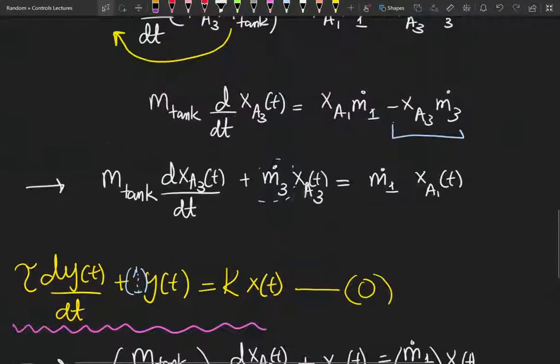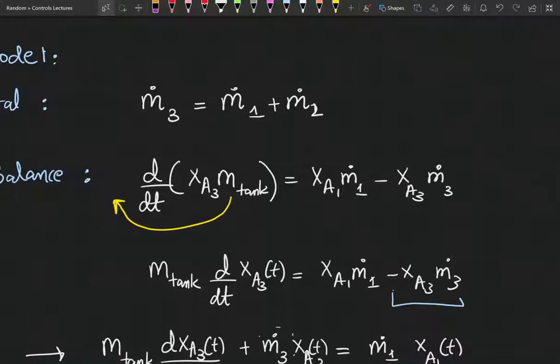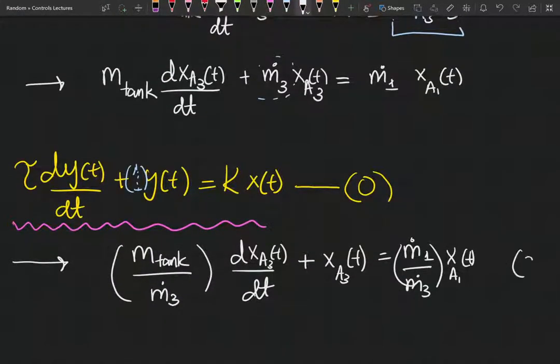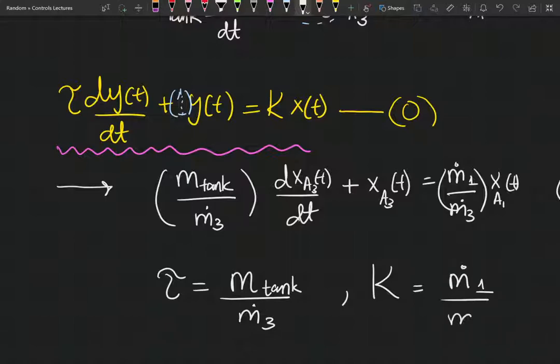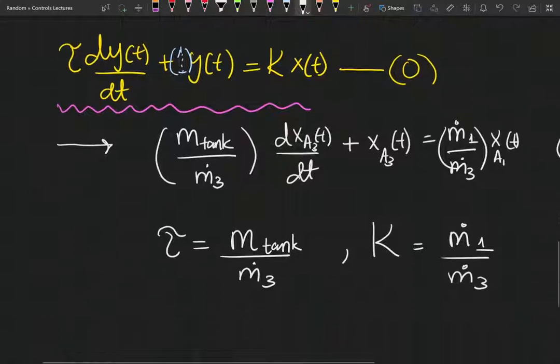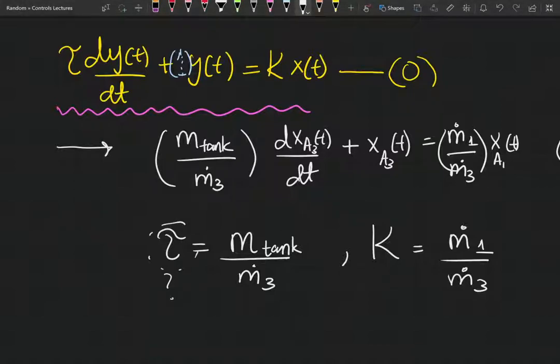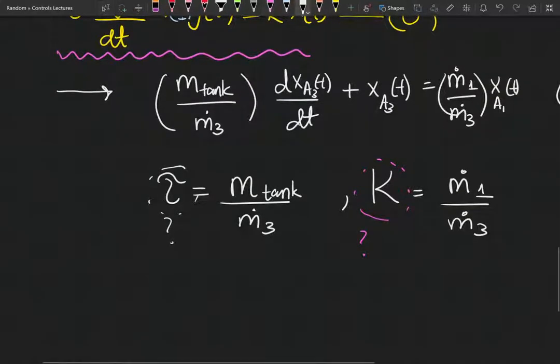If you compare equation zero and equation two, you'll realize that the value of tau—if you compare the coefficients of the derivative term—you realize the value of tau is equal to m_tank divided by m dot 3, and the value of gain is equal to m dot 1 divided by m dot 3.